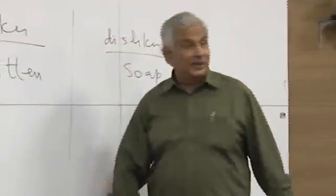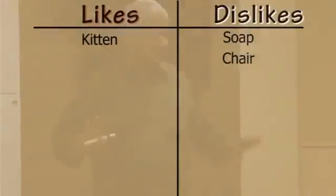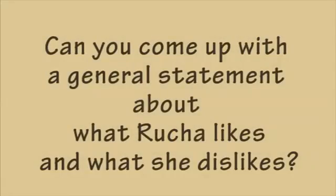How do you draw a line? How can you tell? For example, if I tell you: does Rucha like or dislike chairs — you can't tell, right? Okay, now I will tell you she dislikes chairs. What I want is for you to be able to tell, without my telling you, what she dislikes and what she likes. You can ask me questions; I will tell you the first few cases.